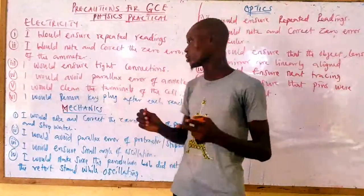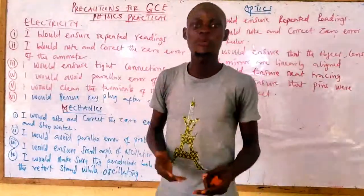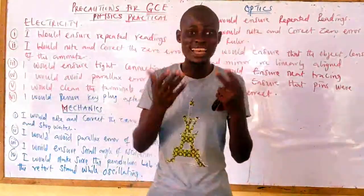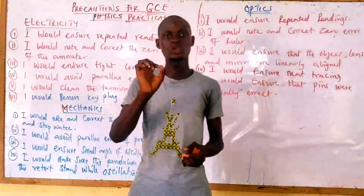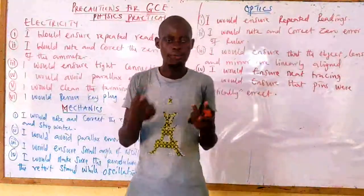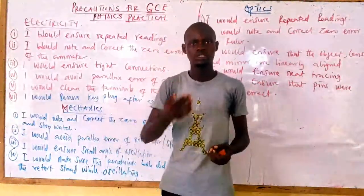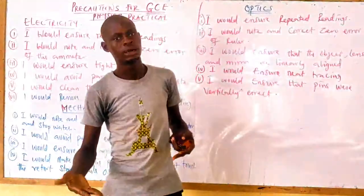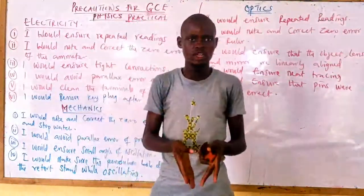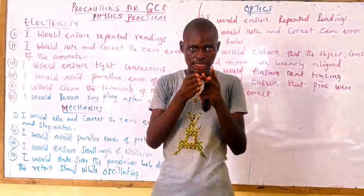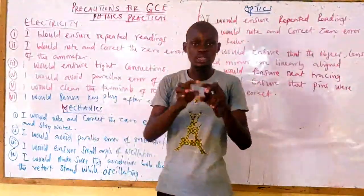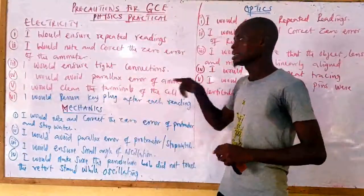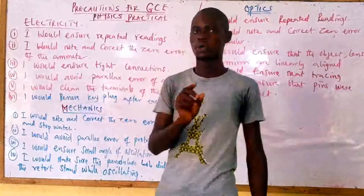The next precaution is: I would avoid parallax error. You avoid parallax error in the ammeter, the meter rule, and the voltmeter. Please note that for electronic devices like voltmeters and ammeters, parallax error means looking at the instrument slantwise instead of directly. So if you are performing the experiment, look at the instrument directly — not slantwise — to avoid this error.